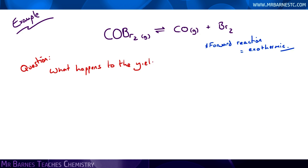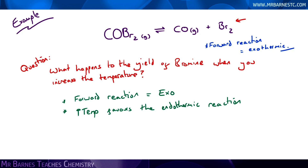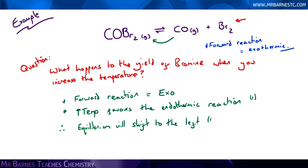The best thing to do is put that into a question format. The question asks: what happens to the yield of bromine when you increase the temperature? The question tells you the forward reaction is exothermic, and you know that higher temperature favours the endothermic reaction — which in this case is the backwards reaction. Therefore equilibrium will shift to the left towards the endothermic side, and the yield of bromine will decrease. You'd get one mark for saying the temperature favours the endothermic reaction, one mark for saying equilibrium shifts to the left, and one mark for the yield of bromine going down.